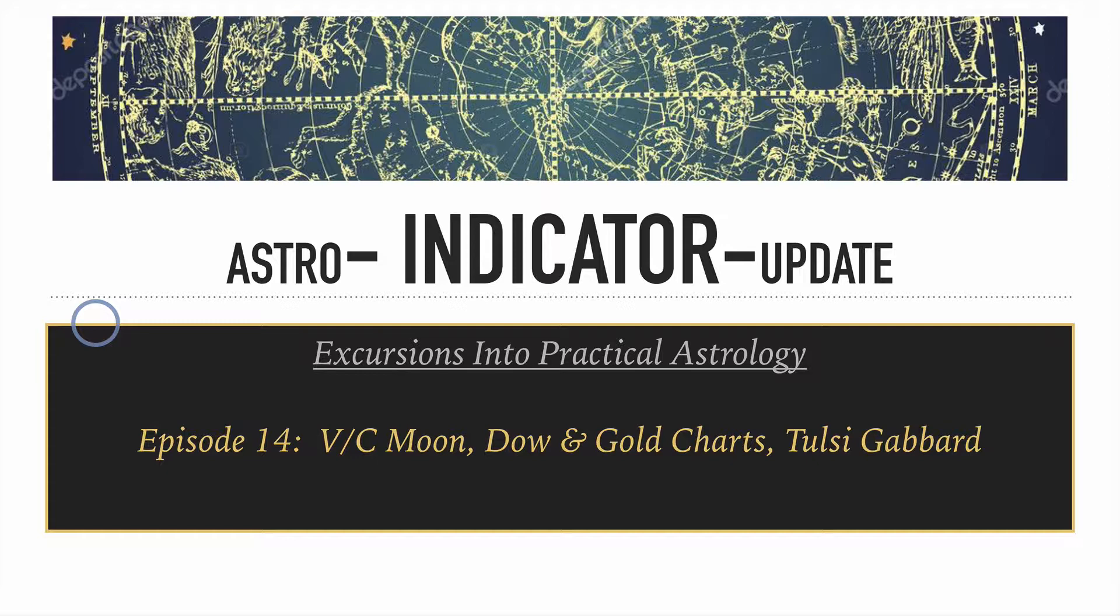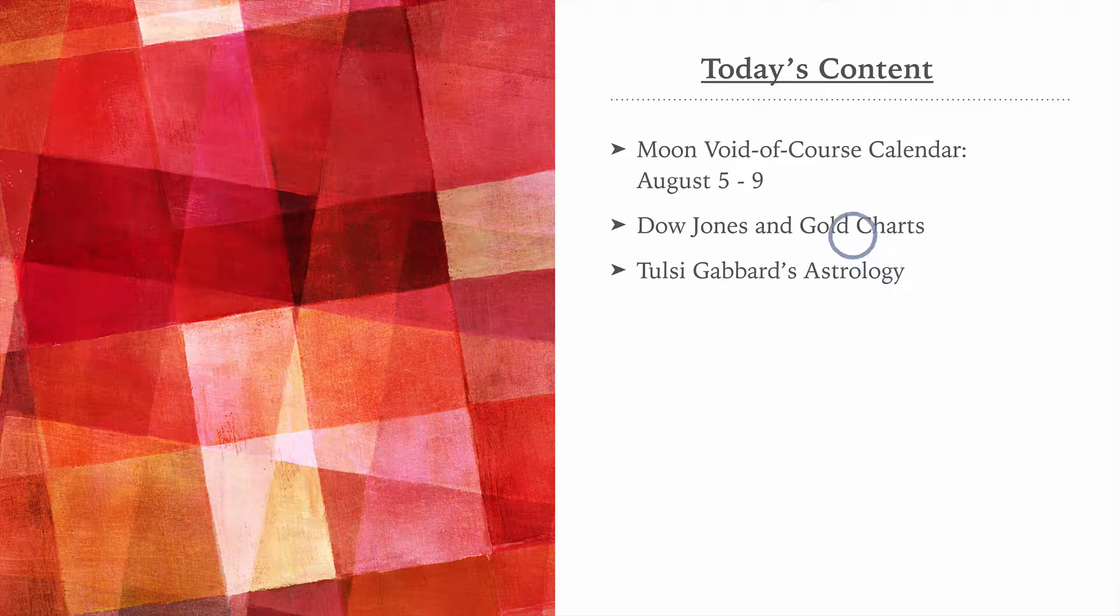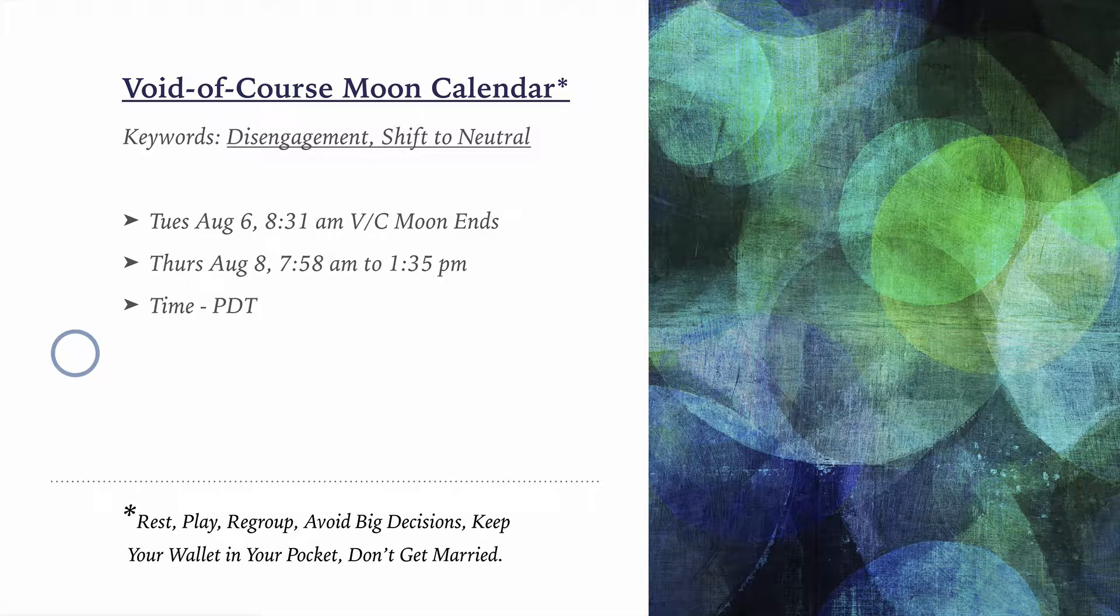This is episode 14. We're going to look at a Void of Course Moon Calendar, Dow Jones Industrial Gold Charts, and Tulsi Gabbard's Astrology. So this is the content which I just went over, and let's get into the Void of Course Moon Calendar.